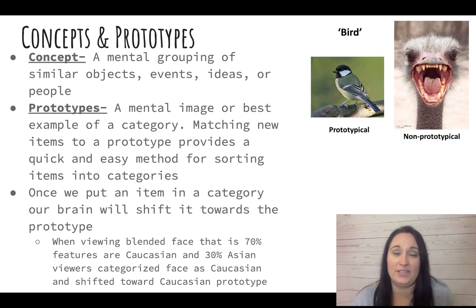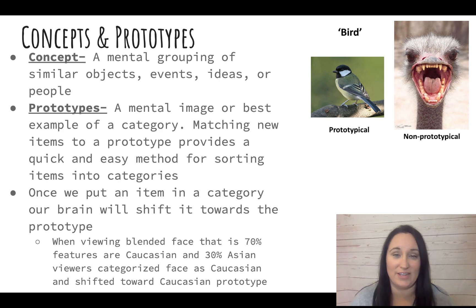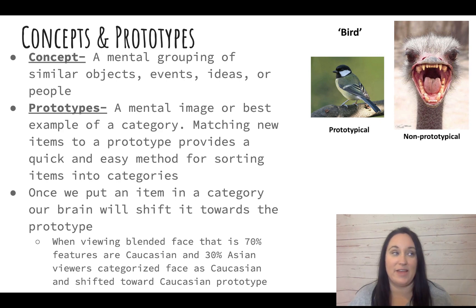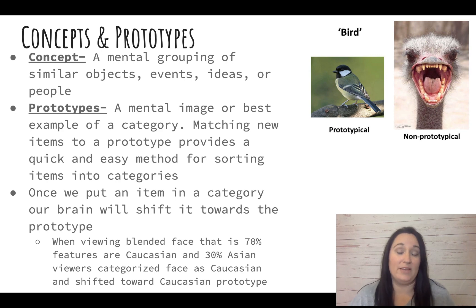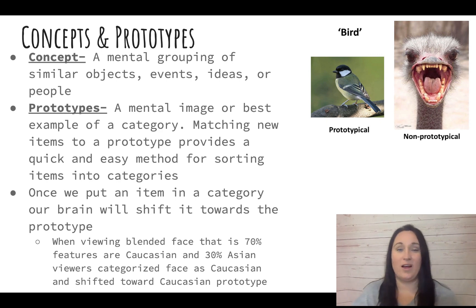So when we think, we like to think in concepts, and concepts are mental groupings of similar objects, events, ideas, or people. Basically, it's like categorizing items, or things, or people. So for example, we can say that the man was angry — the idea of a man is a concept; you might think of an adult male. Angry is a concept that you know what that means. If you ask for a chair, a chair is a concept, it's a category where a bunch of different things would qualify as a chair, but someone else knows what you mean. So it really makes our life easier.